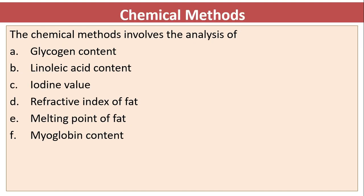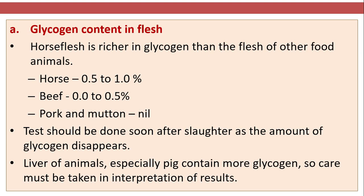Chemical methods involve analysis of glycogen content, linoleic acid content, iodine value, refractive index of fat, melting point of fat, and myoglobin content. Regarding glycogen content, horse flesh is richer in glycogen than the flesh of other food animals.